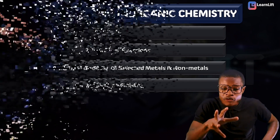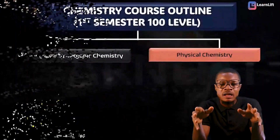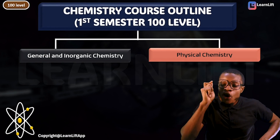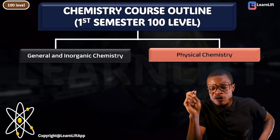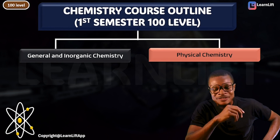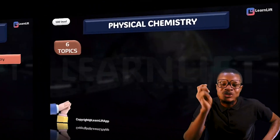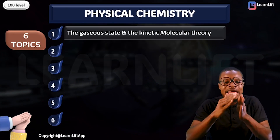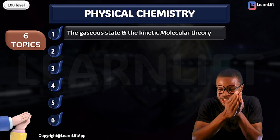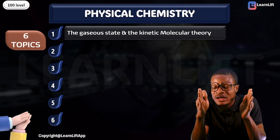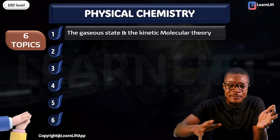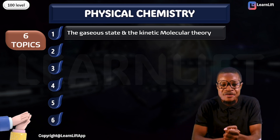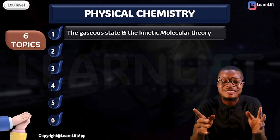Now, under your Physical Chemistry — what is expected of us to know as 100-level students — we have to know a total of six topics. The first is what is called the Gaseous States and your Kinetic Molecular Theory, that's your gas theory. We look at all of them — your Kinetic Molecular Theory, all the various equations under this area, every singular thing.